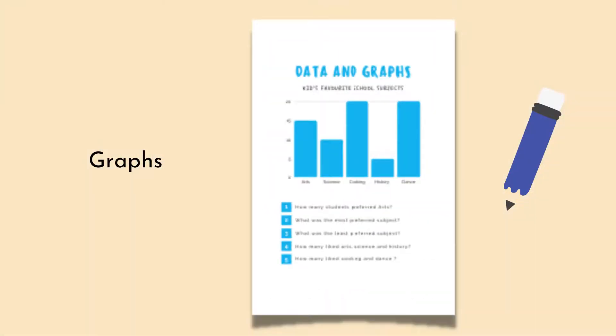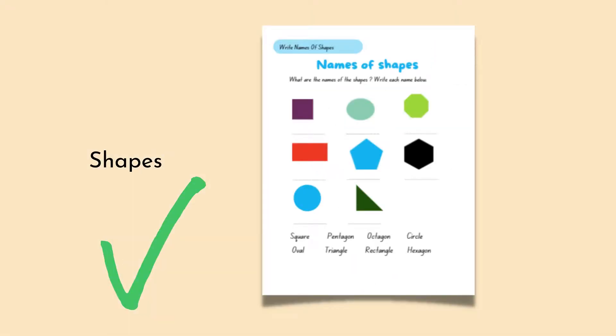There are worksheets on shapes, so children have to learn the names of different geometric shapes: square, circle, oval, pentagon, basic shapes like this, and learn the spellings and also match the shape to its spelling.